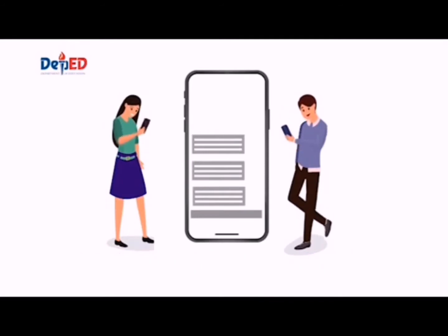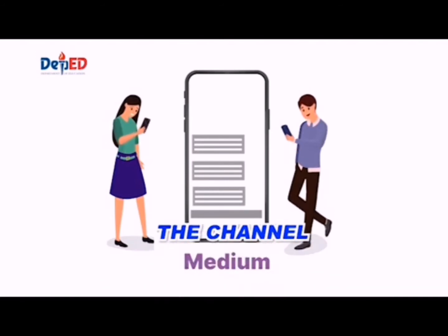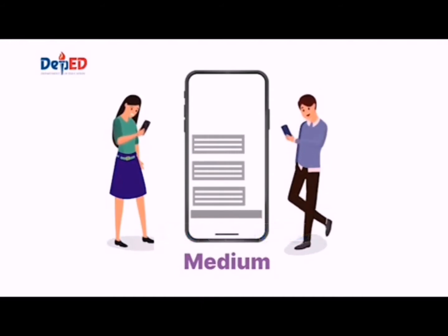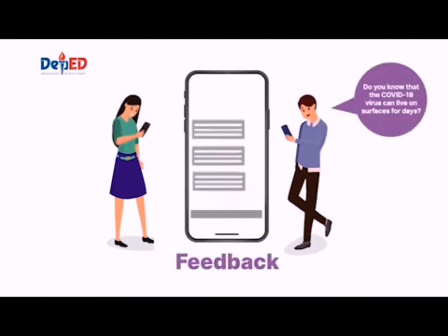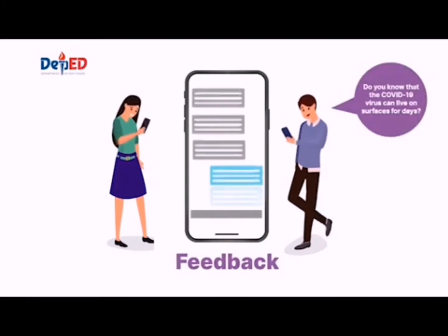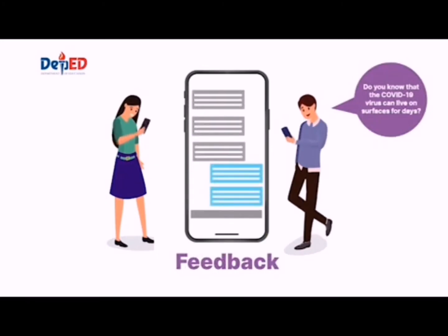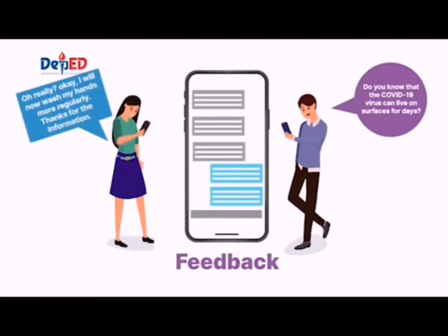Since we are in an age surrounded by different media, let us also emphasize the medium, also called the channel. Text messages, for example, are transmitted through the medium of cell phones, and news is spread through television. Lastly, feedback — feedback may be direct, such as a written or verbal response, or it may take the form of an act or deed, which we call an indirect response.